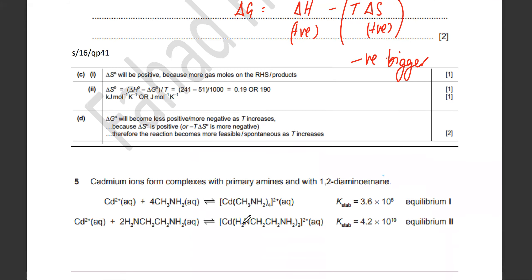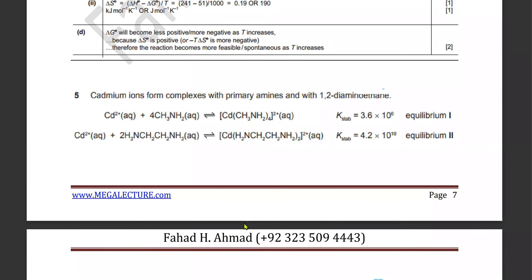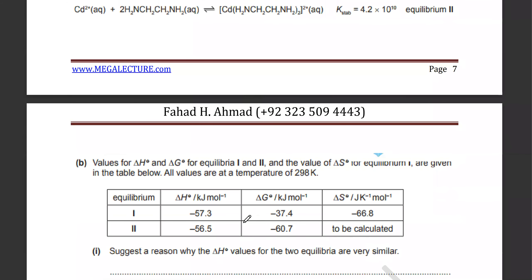Let's continue tomorrow. We're going to do more questions and then a different topic. Remember: there are three or four things — predicting the sign of delta S, measuring delta S using products minus reactants, and then delta G = delta H minus T delta S.